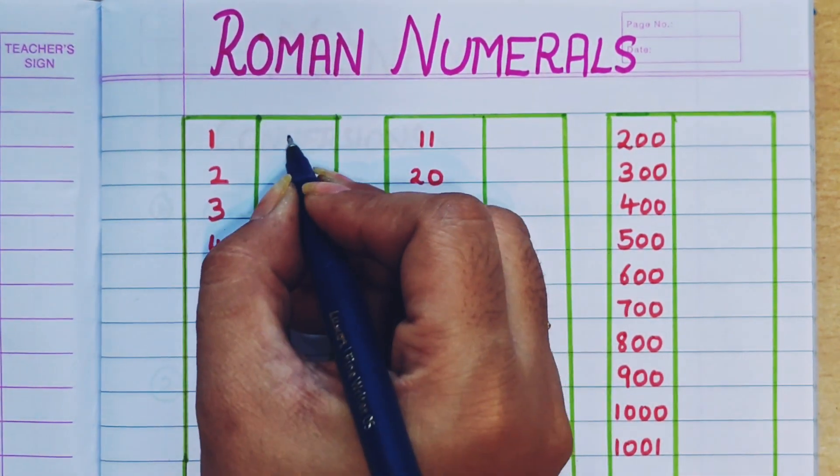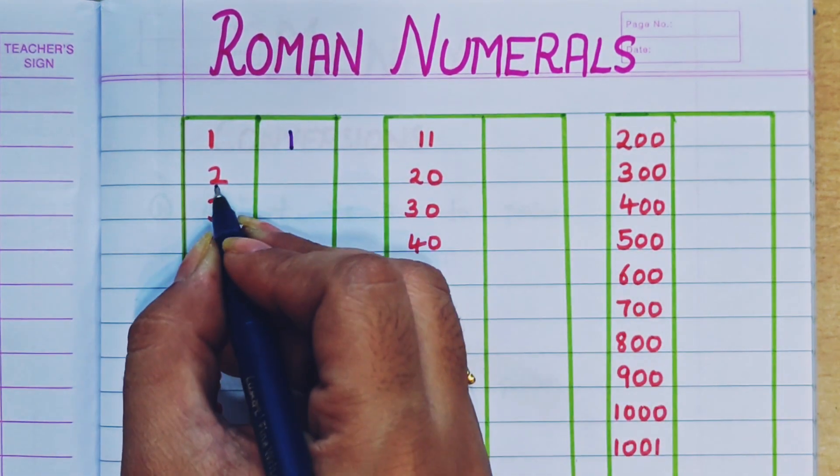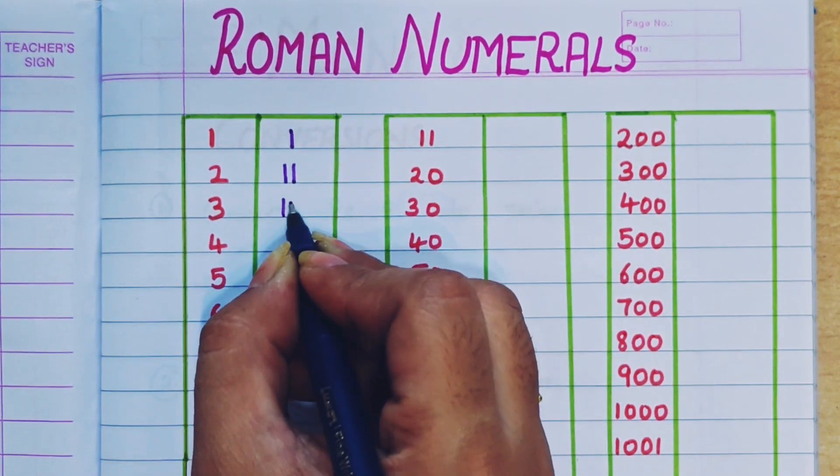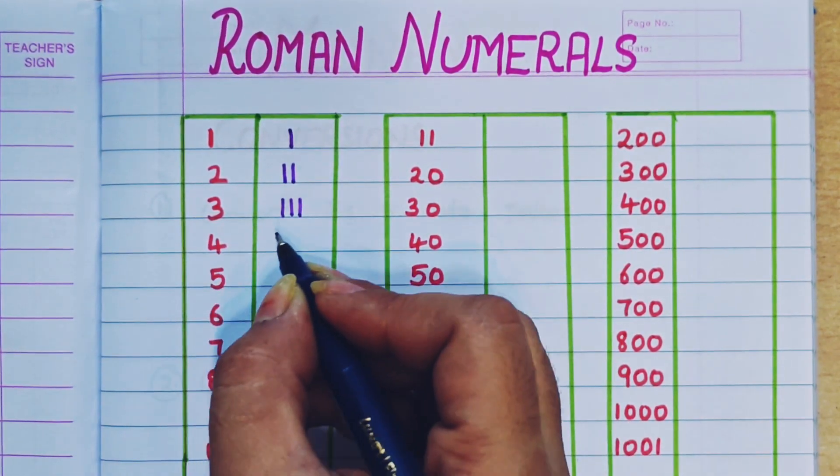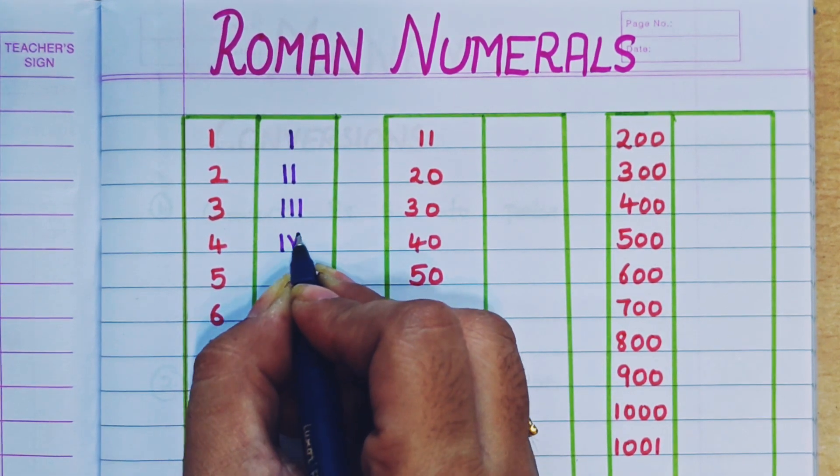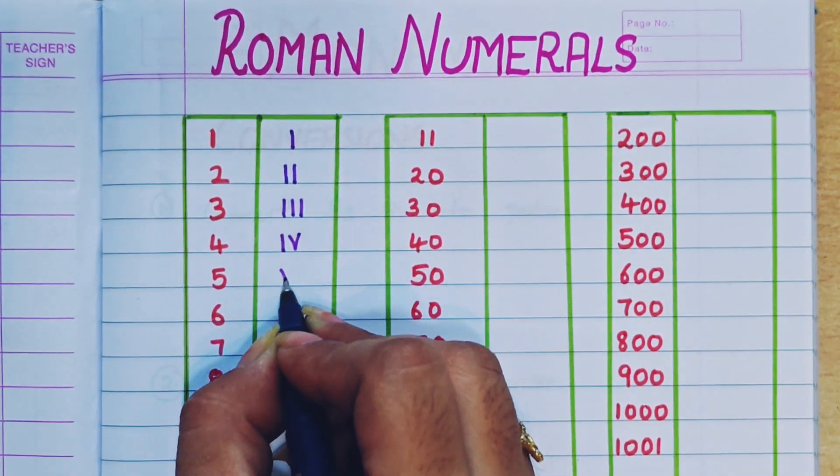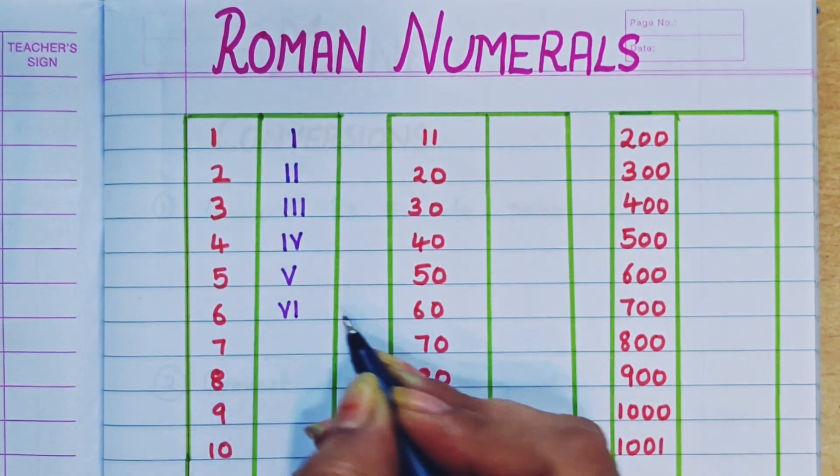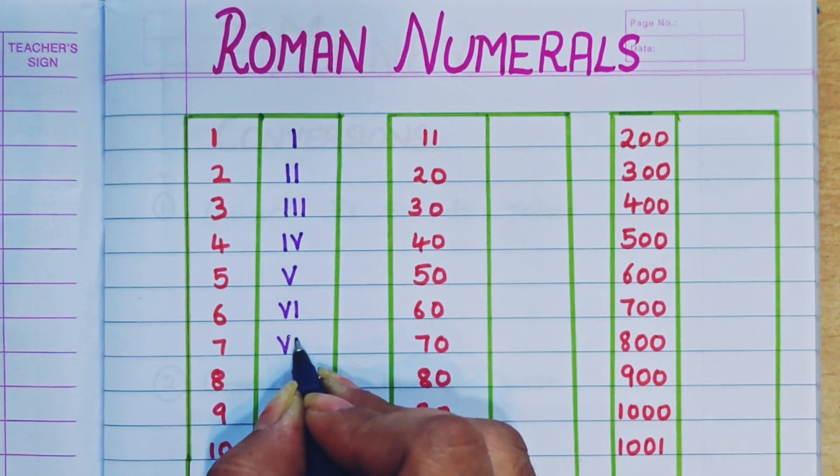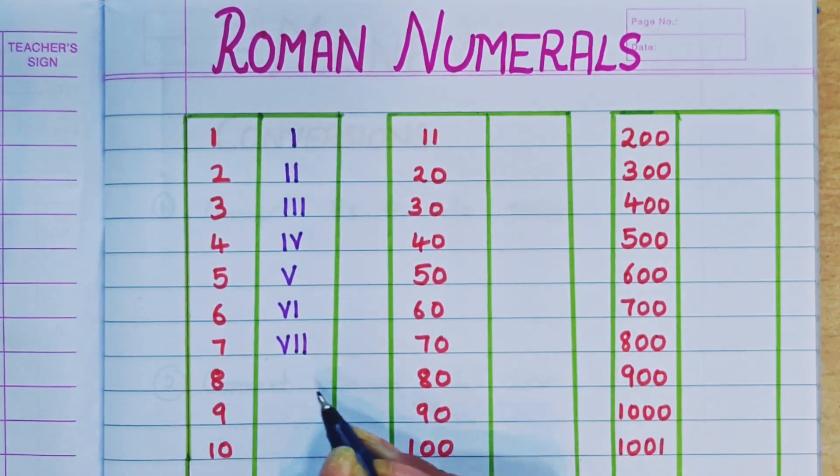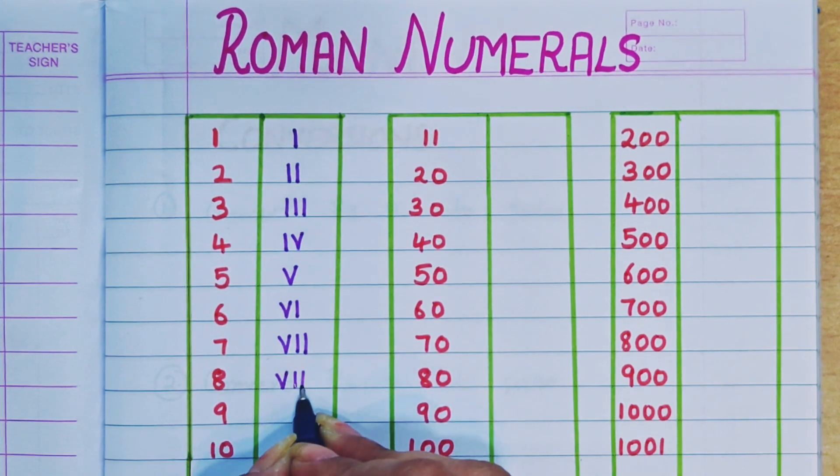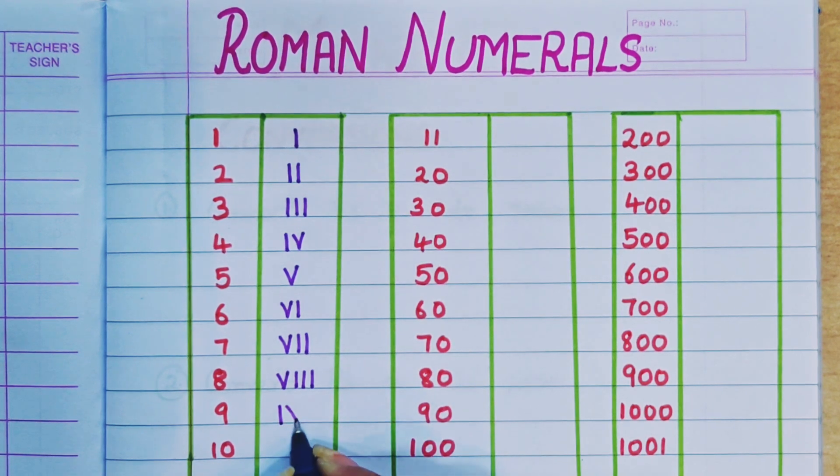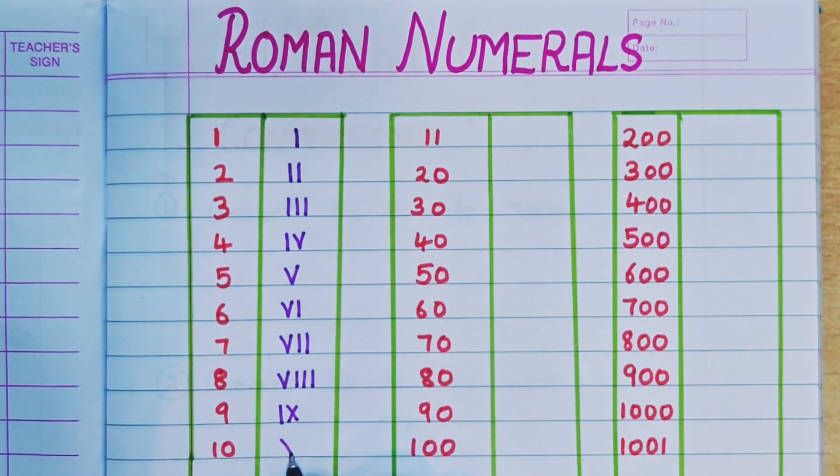1 is represented as I, 2 double I, 3 triple I, 4 I and V, 5 V, 6 V I, 7 V I I, 8 V I I I, 9 I X, 10 X.